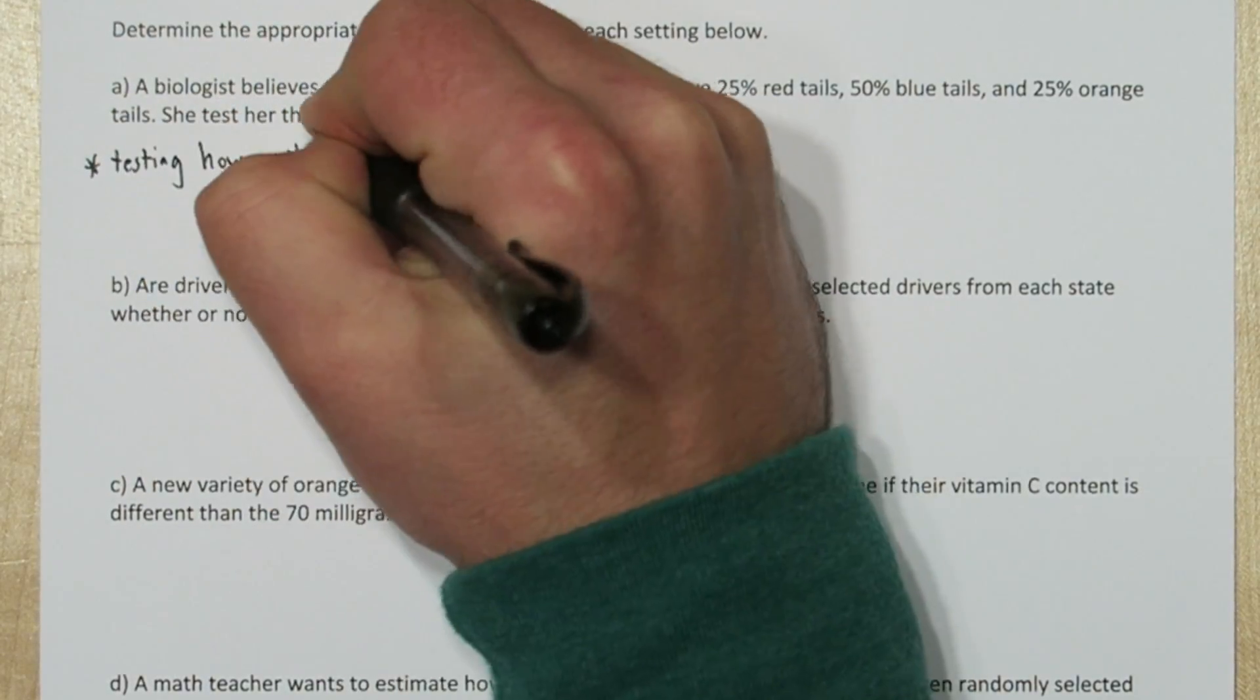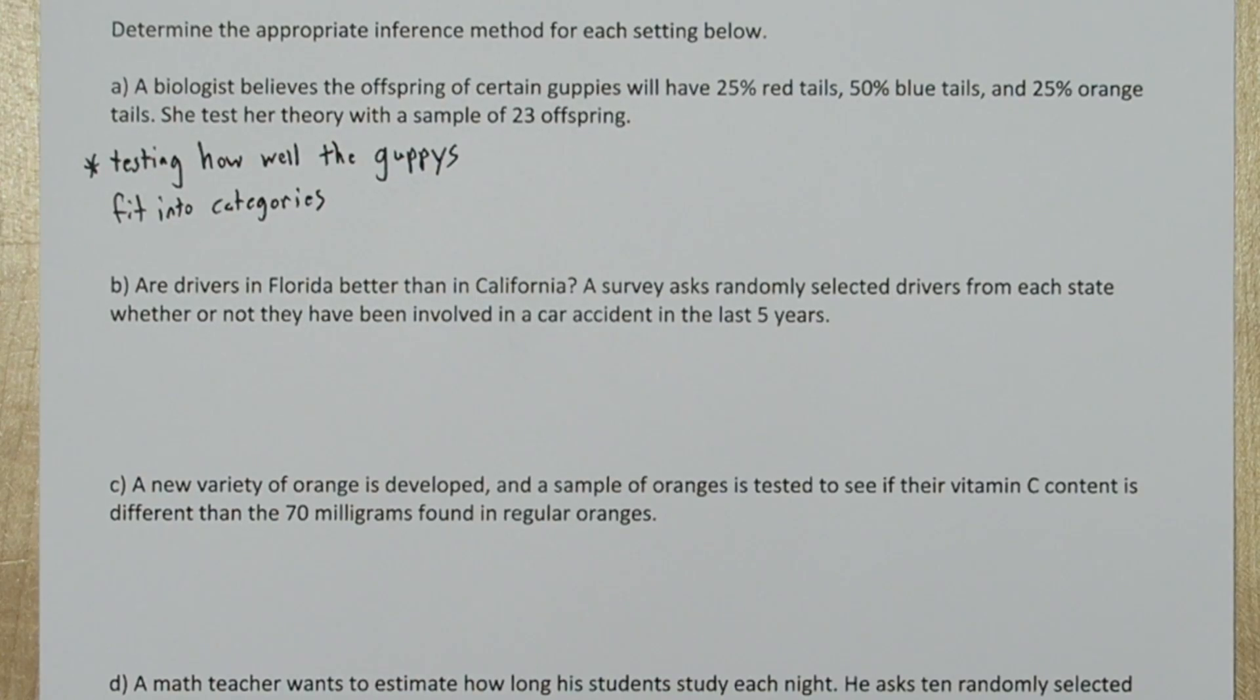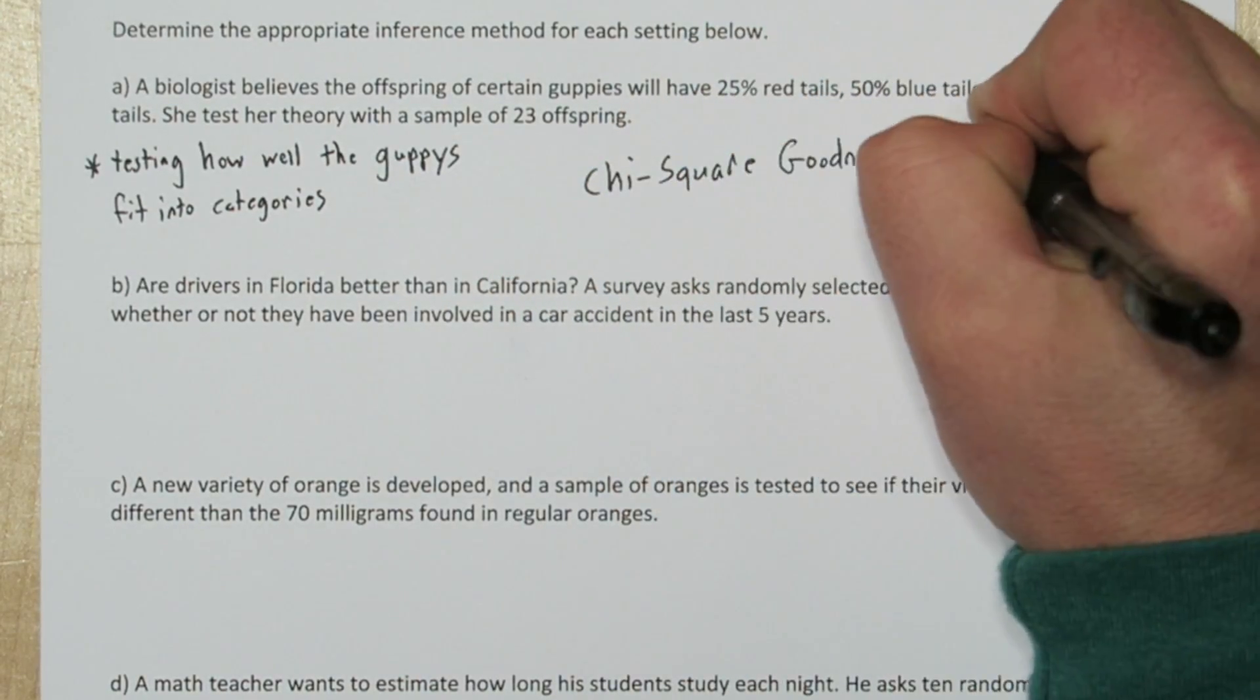In this first one, the biologist is testing how well the guppies fit in two categories. So this is a chi-square goodness of fit test.